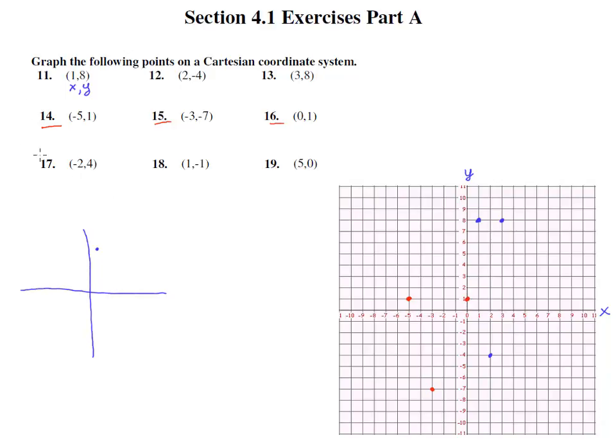Now number 17, 18 and 19 let's do that in the color green. Number 17 is negative 2, 4. So we go back to 1, 2 backwards. Up 1, 2, 3, 4 is right there where negative 2 and positive 4, negative 2 on the X and 4 on the Y meet.